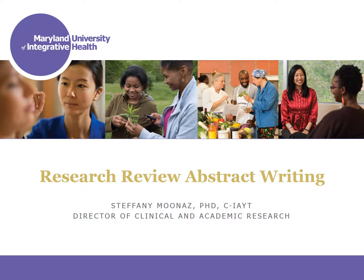If you haven't already, please be sure to review the overall guidelines that provide some information about abstract development and submission for all types of abstracts for the MUIH Research Symposium. This presentation is specifically for those who are submitting a research review abstract. A research review can take several forms, but it is basically an overview of the existing literature that is already published regarding a specific research question or research area. You might be submitting a systematic review, it might include a meta-analysis, or it might be a narrative review. All of those types of reviews are fine. You want to make sure that your research is actually a review if you're using this particular submission type.